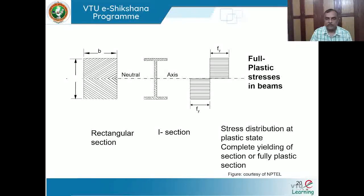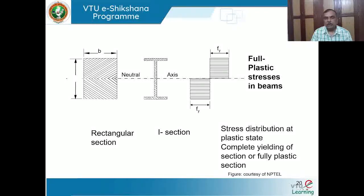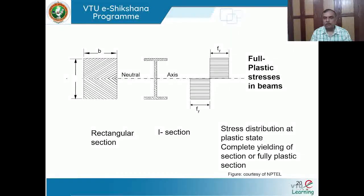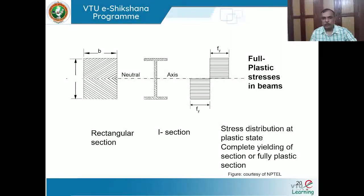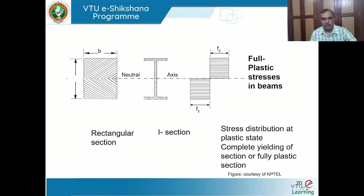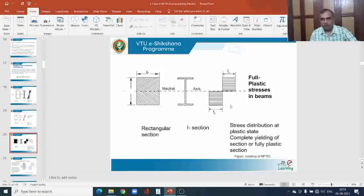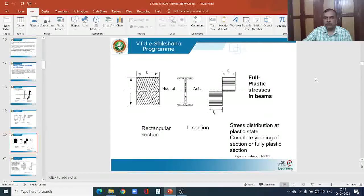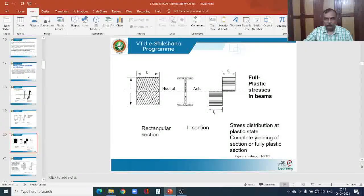With the cross-section fully plastified, we need to examine how cross-sectional properties are defined, where the neutral axis lies, and various related concepts. These will be discussed in the next class. Thank you for listening — if you have any questions, we can discuss them now.